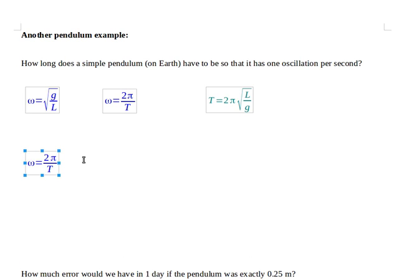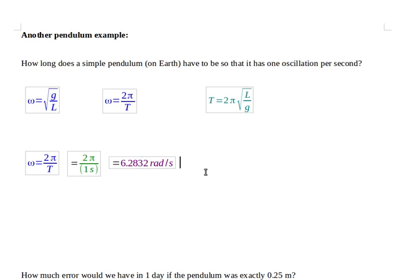So if I start with my equation here, which relates the period to the angular frequency, if I've got one oscillation per second, that means each oscillation takes one second. So when I plug in that 2 pi over one second, I come up with an angular frequency of 6.2832 radians per second.